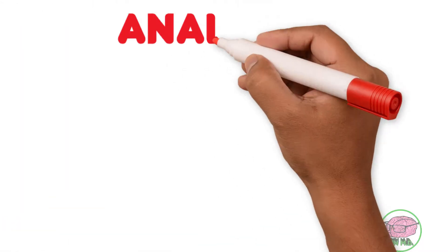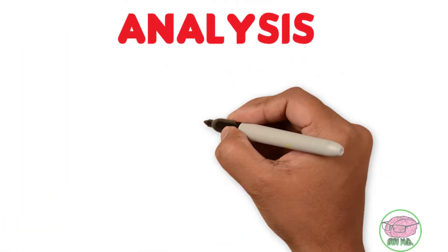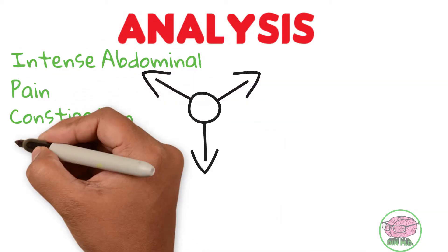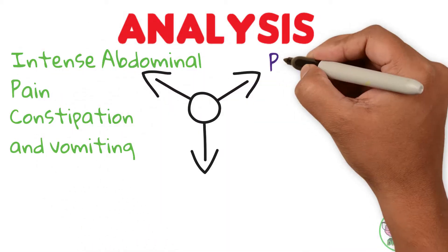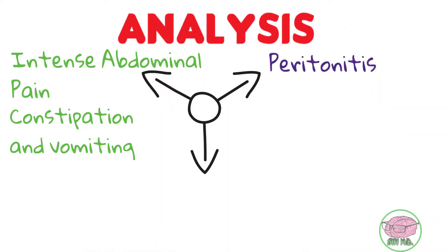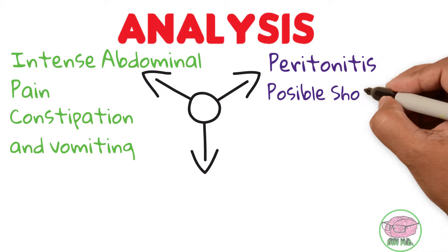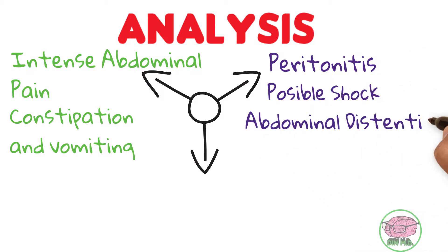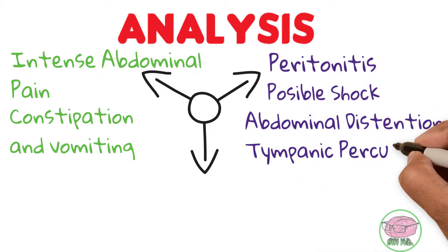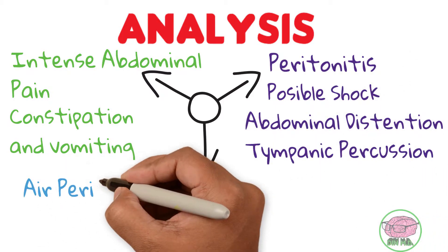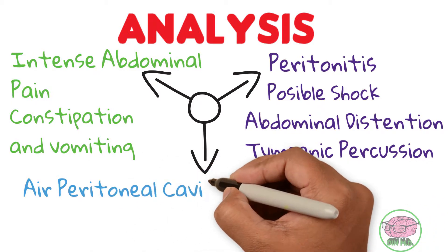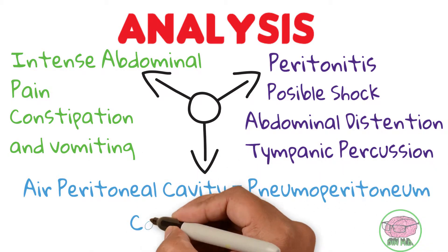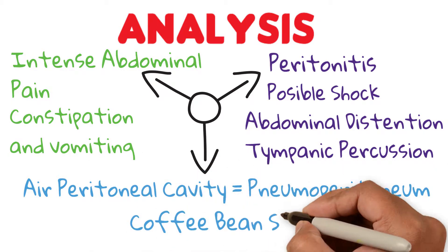Now let's do a quick analysis of the case. The patient has intense abdominal pain, constipation and vomiting, peritonitis, possible shock, abdominal distension, tympanic percussion, air in the peritoneal cavity known as pneumoperitoneum, and a coffee bean sign.